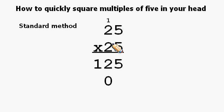2 times 2 equals 4. Add the 1 we had carried earlier, and we get 5. Now all we need to do is add these numbers to get our answer.